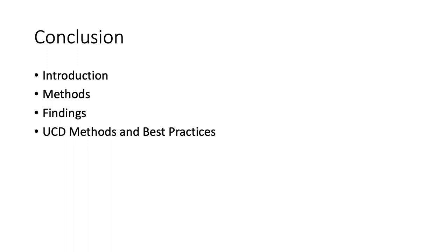In conclusion, I've talked about some background about ACI. Then I introduced the scoping methods I used to select papers. I also mentioned the findings among reviewed articles. Then I talked about the UCD methods and best practices. At last, the future work was discussed. And these are the references I used in this presentation. Thank you.